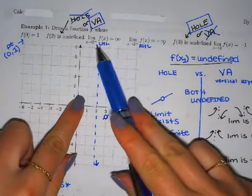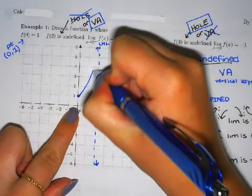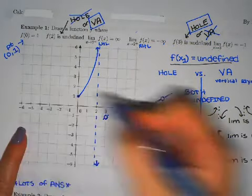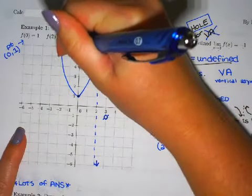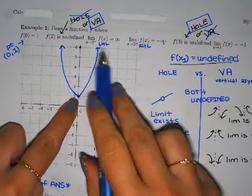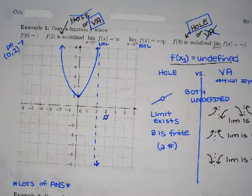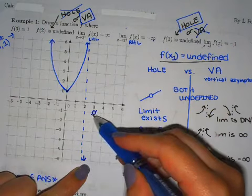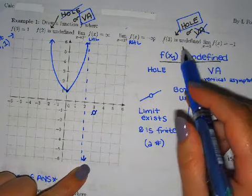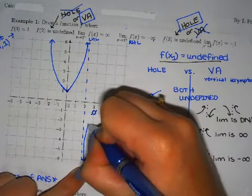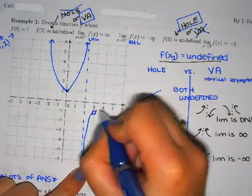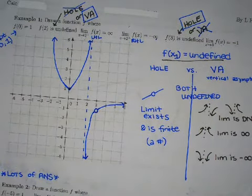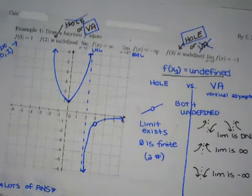Now the hardest part: connecting everything. I have the point (0, 1) and the left-hand limit going up to infinity at x = 2, so I connect those — I'll make it a parabola just for fun. Then I connect the right-hand limit going down to negative infinity from x = 2 over to the hole at (3, -1). There are tons of different valid answers — you could go super crazy with it — as long as it satisfies the conditions.